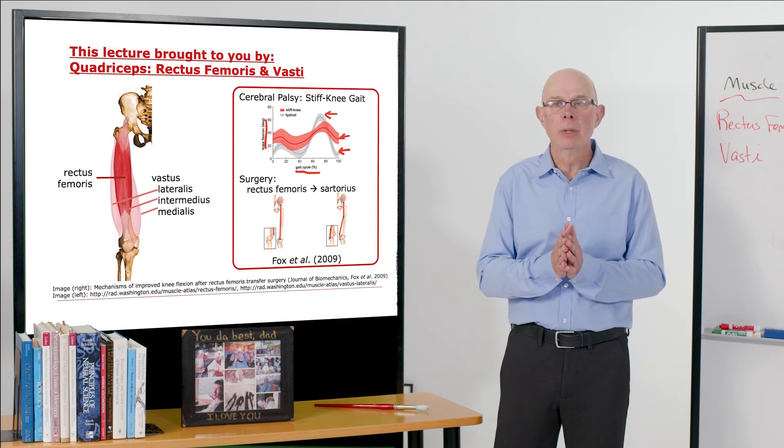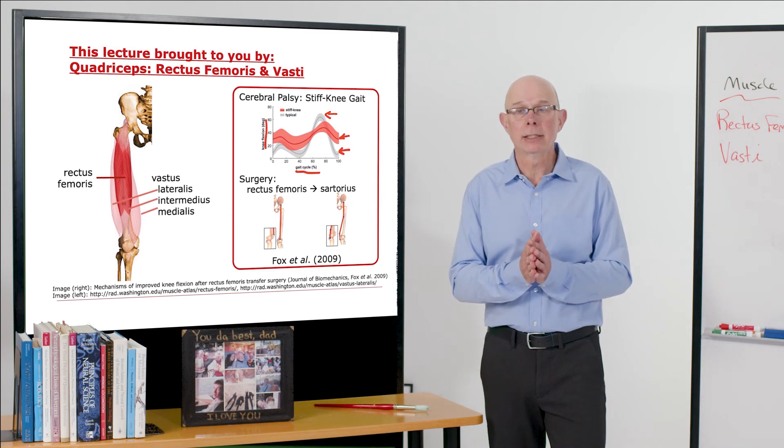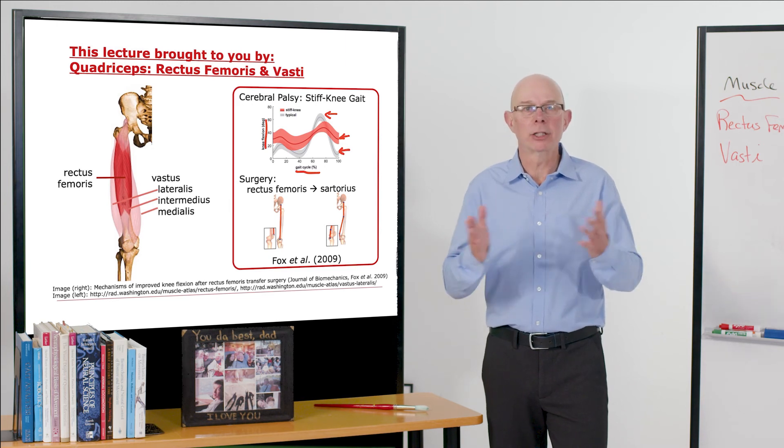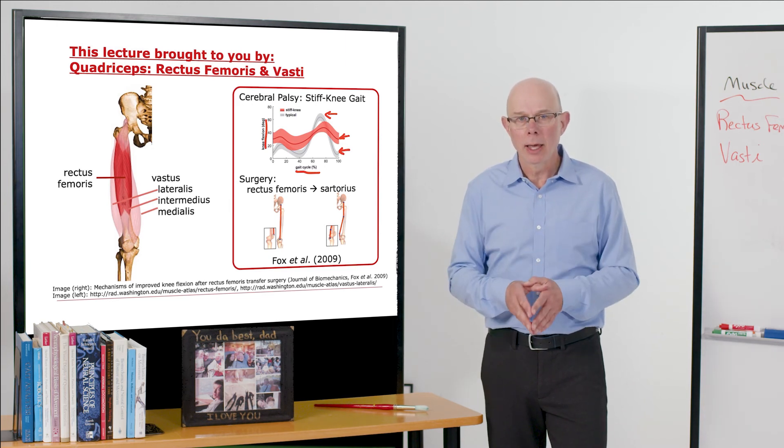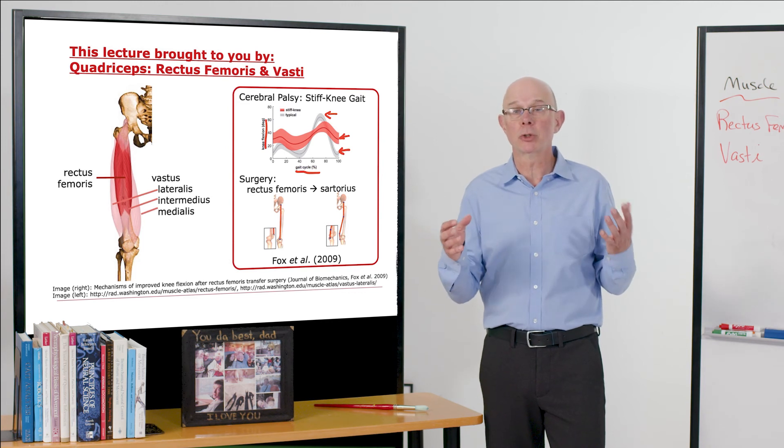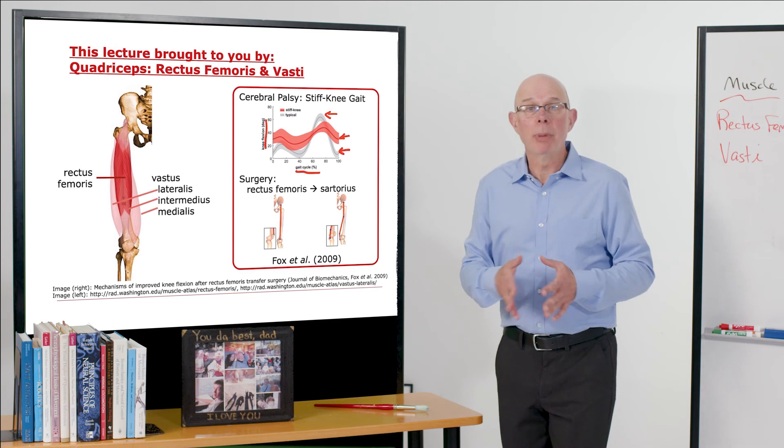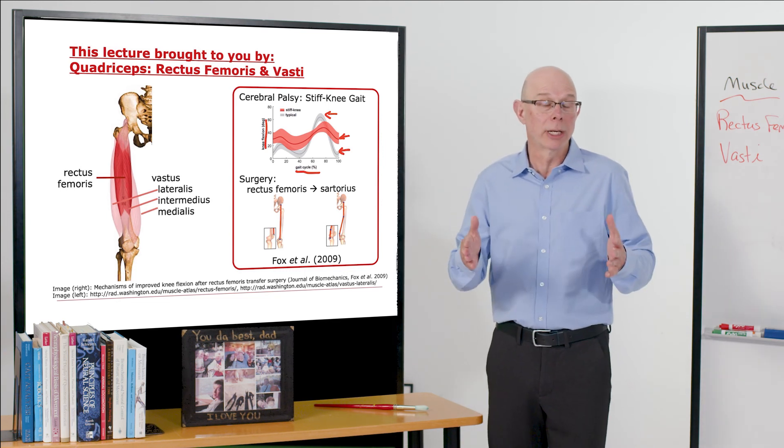When that's the case, sometimes individuals with cerebral palsy will have what's called a rectus femoris transfer surgery. It's a type of surgery in which the muscle is detached from the patella and rerouted behind the knee so that it turns into more like a sartorius.